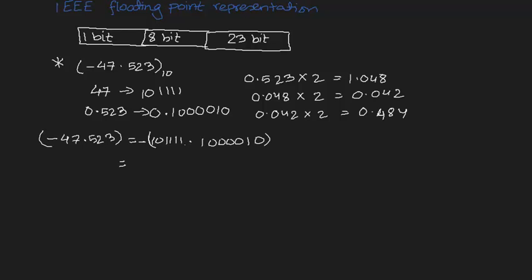We have to shift the decimal point to the left so there is just one digit before the decimal. We get 1.0111110000 multiplied by 2 to the power of 5. When shifting the decimal five places to the left, we write 2 to the power of 5. If shifting to the right, we'd write 2 to the power of minus 5. For four places left it's 2^4, for four places right it's 2^-4.